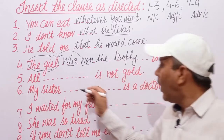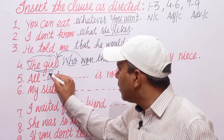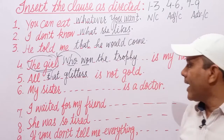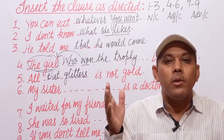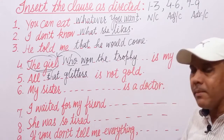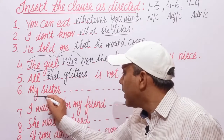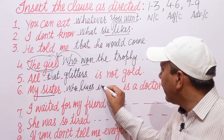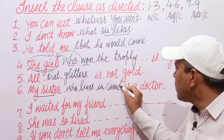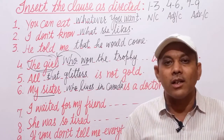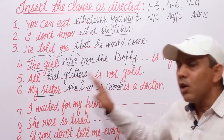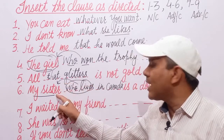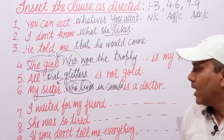Next: 'All that glitters is not gold' — 'that glitters' is the adjective clause. Next: 'My sister who lives in Canada is a doctor' — 'who lives in Canada' is the adjective clause qualifying the noun 'sister,' with subject-verb combination.